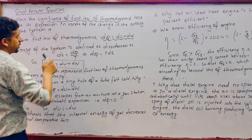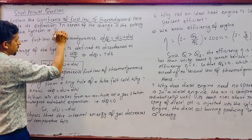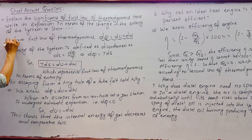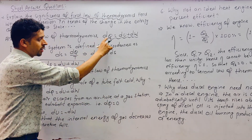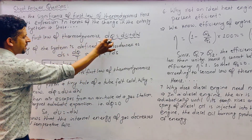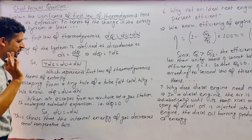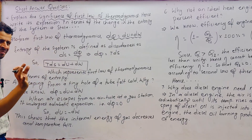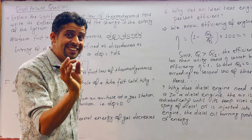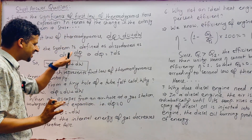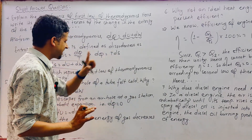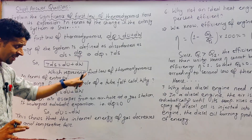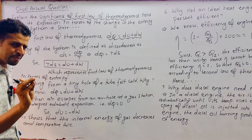Question 4: Explain the significance of the first law of thermodynamics. From the first law, dQ = dU + dW. Entropy of the system is defined as a measure of disorderness, where dS = dQ/T, so dQ = T·dS. Substituting, T·dS = dU + dW, which represents the first law of thermodynamics in terms of entropy.